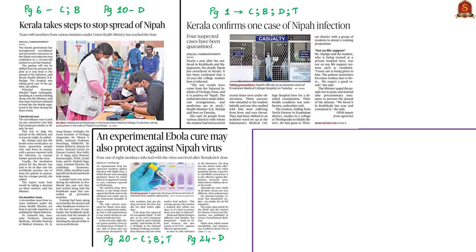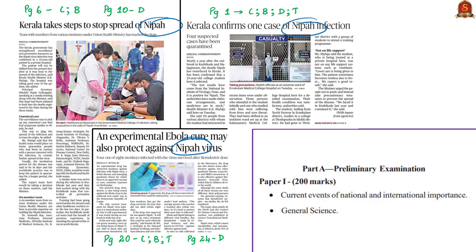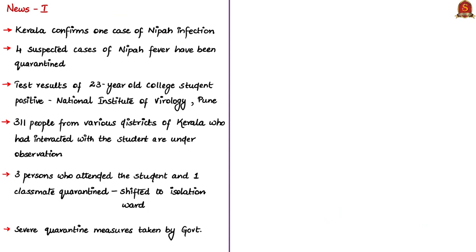Now there are three news articles with respect to Nipah infections. The analysis will be relevant in prelims under current events of national importance and in general science, and can be linked to mains under GS paper 2 in issues relating to development of social sector services related to health. The first news article states that Kerala confirms Nipah infection. On June 3rd, a district administration in Kerala had dismissed the Nipah virus infection as rumors.